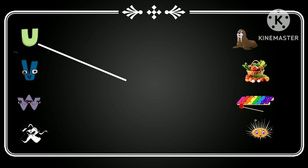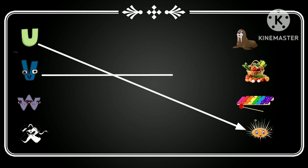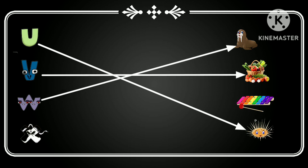U for Archon, V for Vegetables, W for Walrus, X for Xylophone.